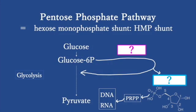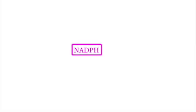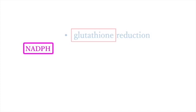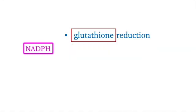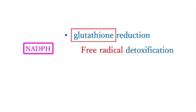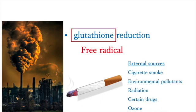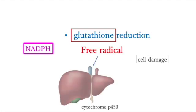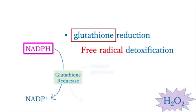The pentose phosphate pathway plays a critical role in regulating NADPH and ribose-5-phosphate production. NADPH is an essential electron donor. It is required for glutathione reduction, fatty acid synthesis, and cholesterol synthesis. Glutathione reduction is required for free radical detoxification. Some free radicals are generated internally, others externally. If free radicals overwhelm the body's ability to regulate them, a condition known as oxidative stress occurs. NADPH is required for free radical detoxification.